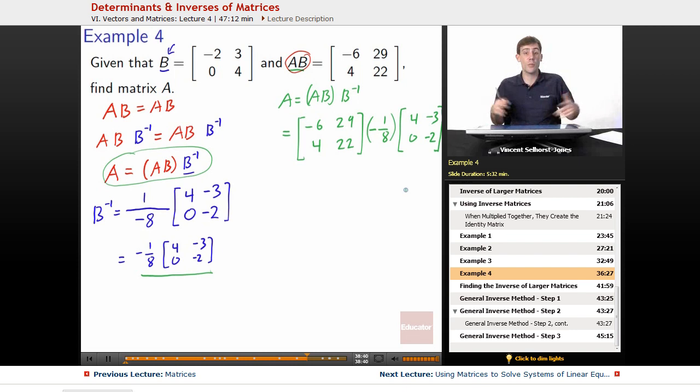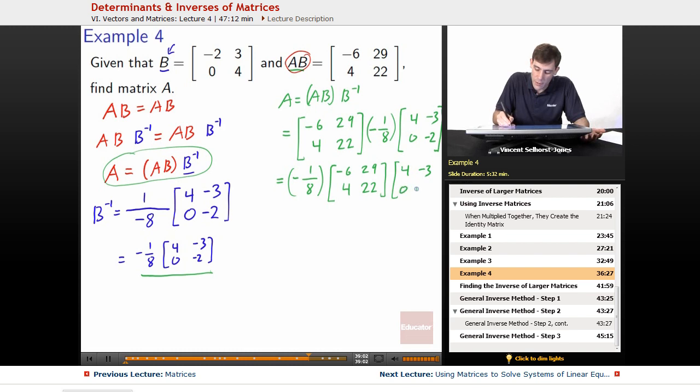So I think it's easier to bring the fraction in afterwards, so let's pull the fraction to the front. The fraction there is just a scalar, so it's just going to scale the matrix, so we can scale the matrix any time we want. Let's just pull it out to the front so we can have our matrices do their multiplication. So we've got [-6, 29; 4, 22] [4, -3; 0, -2].